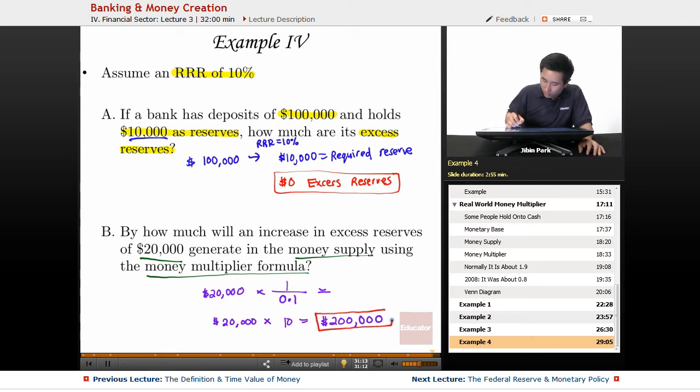So again, this is assuming that there's no leaks and the money is multiplied fairly rapidly, but in the real world, you have money multiplier formulas of 1.9. In times where people aren't spending a lot of money, then it might be closer to 0.8. What a disaster would be in our economy if our money multiplier formula was 0.1 or 0, if people weren't borrowing money.